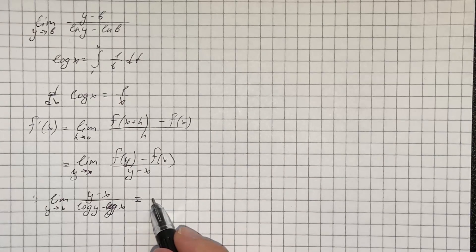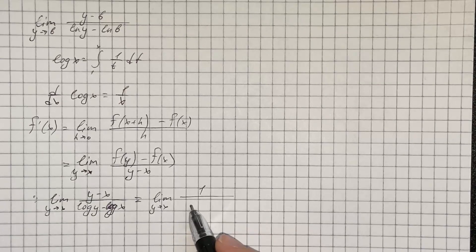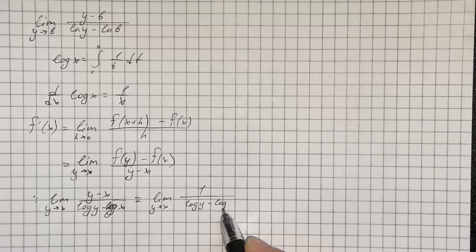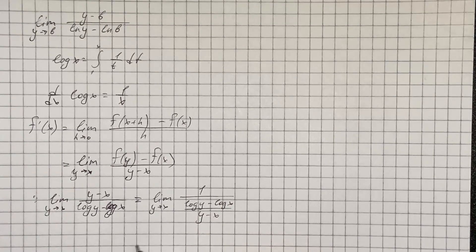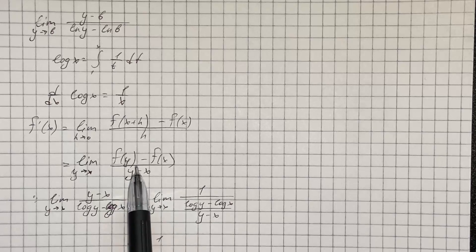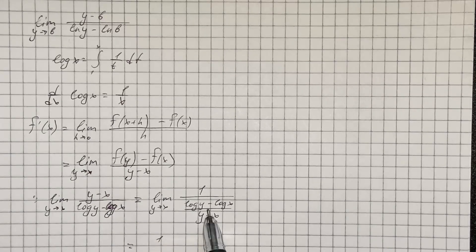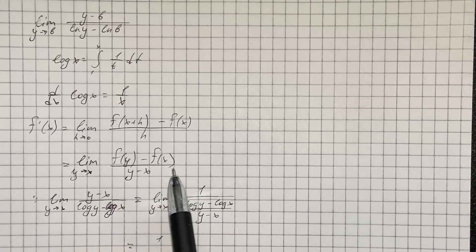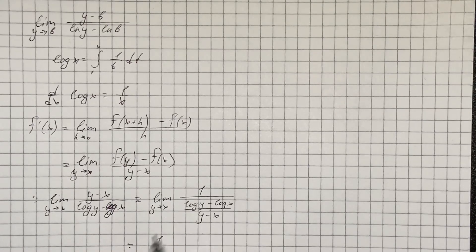So we take limit as y approaches x of 1 divided by log of y minus log of x over y minus x. So we take limit of the numerator and we get 1, and when we take limit of the denominator, we get that limit of the denominator equals derivative of f of x, which is log of x. So that's going to be 1 over x.